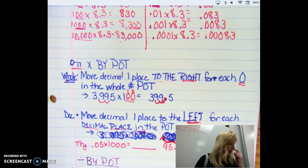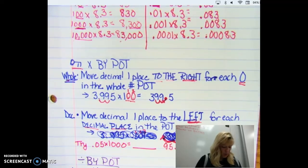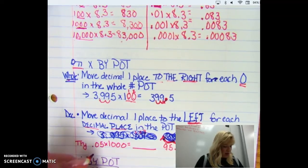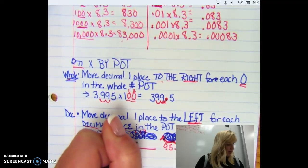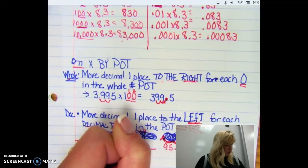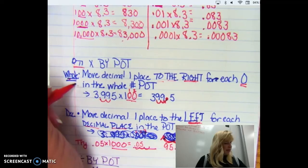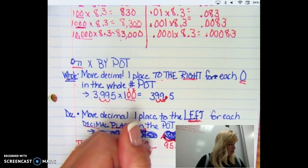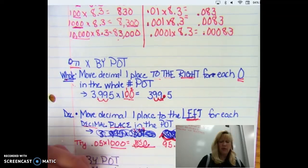Let's try 0.05 times 1,000. So you can pause the video, try it. What you should have come up with is if you put the 0.05 here and you move it one, two, three, because there are three zeros in the 1,000, just like it says up here. You are going to put your decimal right there. This ends up being a placeholder zero and you end up with 50.